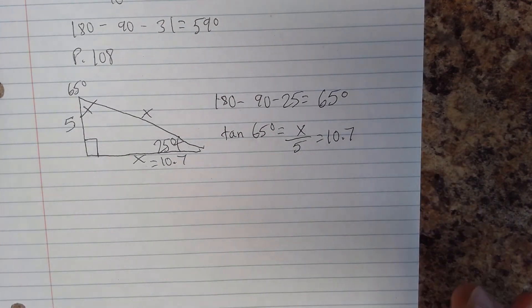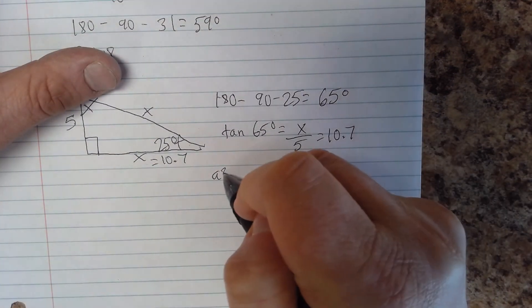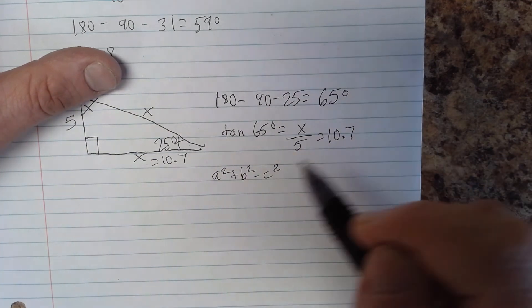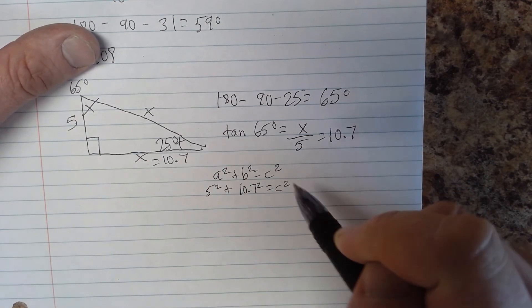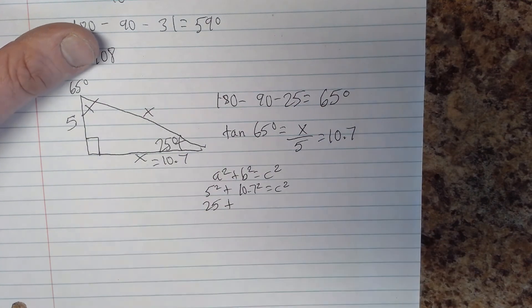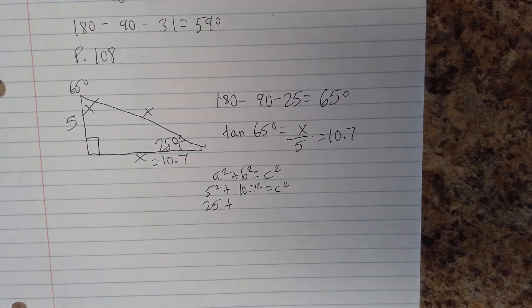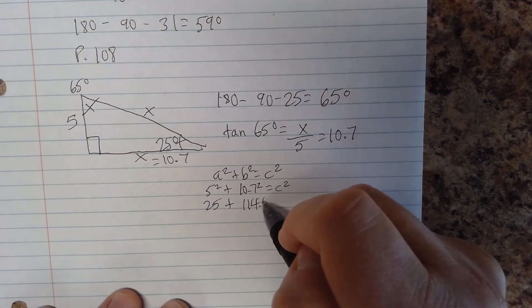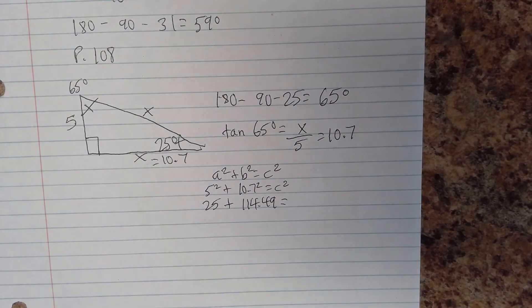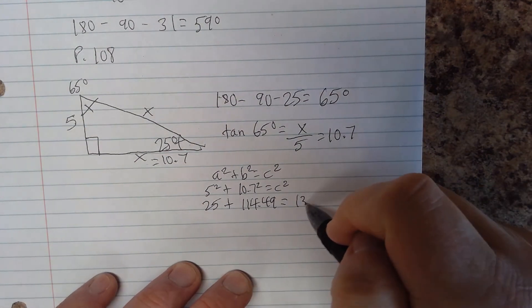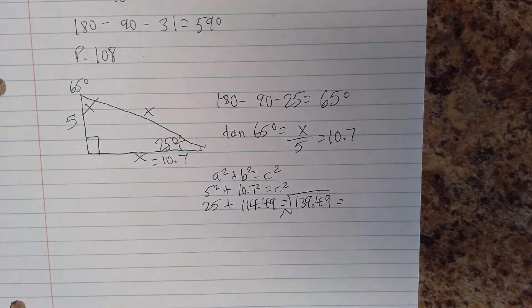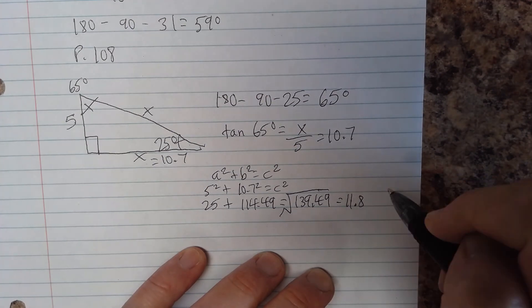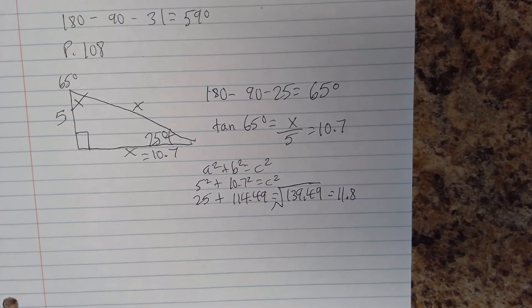And so finishing off A squared plus B squared equals C squared. 5 squared plus 10.7 squared equals C squared. 5 times 5 is 25, 10.7 times 10.7 is 114.49. Add them all together, 139. 11.8.